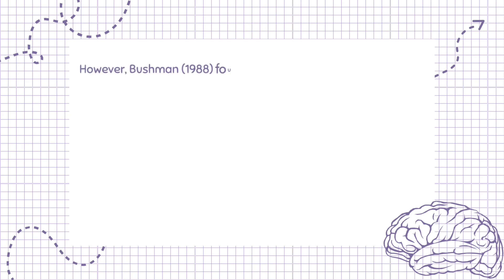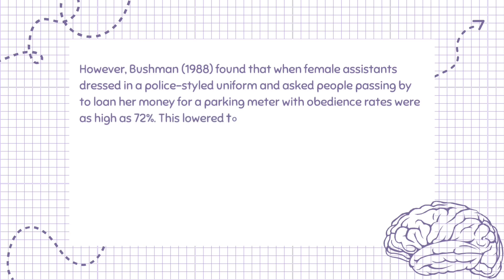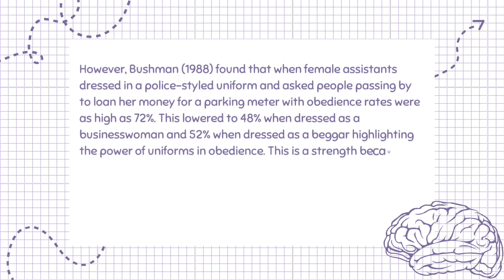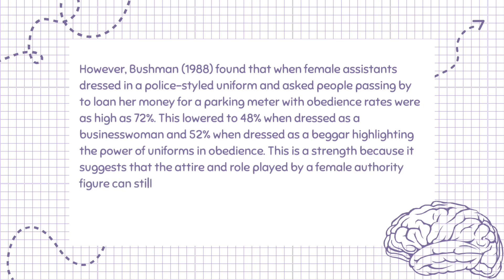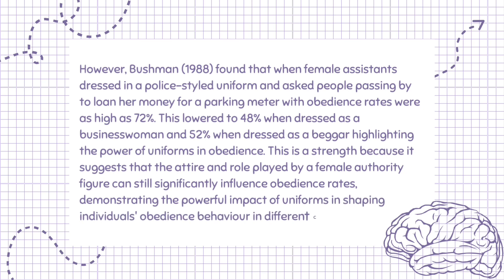However, Bushman (1988) found that when female assistants dressed in a police-styled uniform and asked people passing by to loan her money for a parking meter, obedience rates were as high as 72%. This lowered to 48% when dressed as a businesswoman or 52% when dressed as a beggar, highlighting the power of uniforms in obedience. This is a strength because it suggests that the attire and role played by a female authority figure can still significantly influence obedience rates, demonstrating the powerful impact of uniforms in shaping individuals' obedience behavior in different contexts.